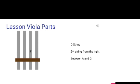All right, so let's learn another string. This is the D string right here. Here's what we need to know about the D string: it's the second from the right — one, two. And it's between the A string and the G string, which we haven't learned yet.